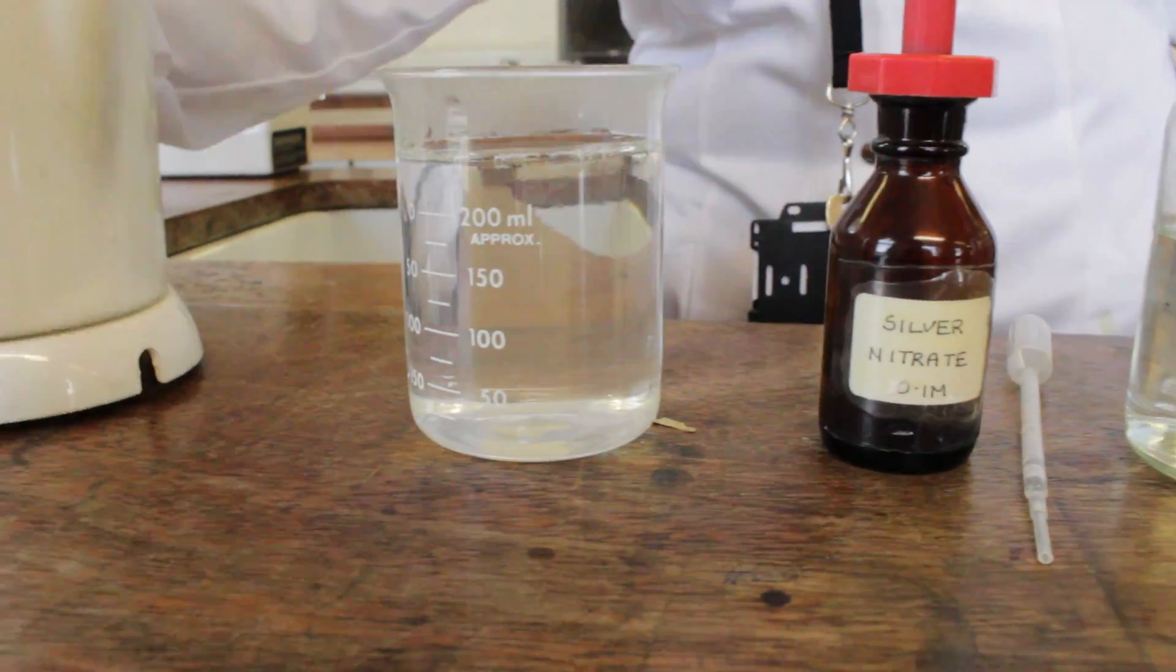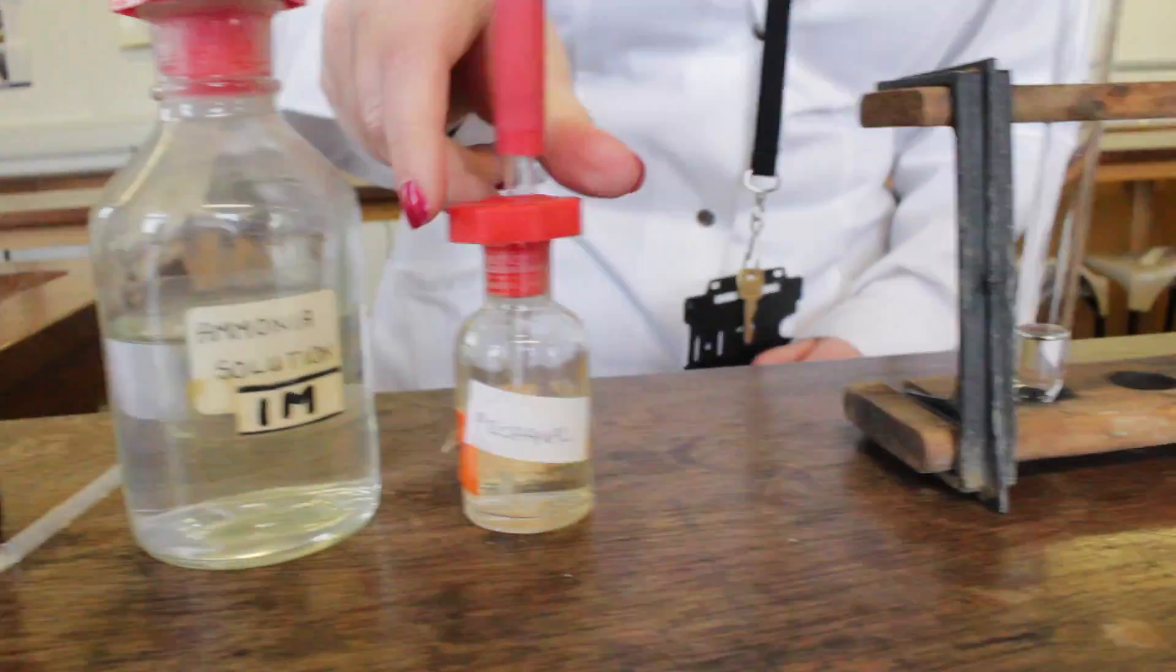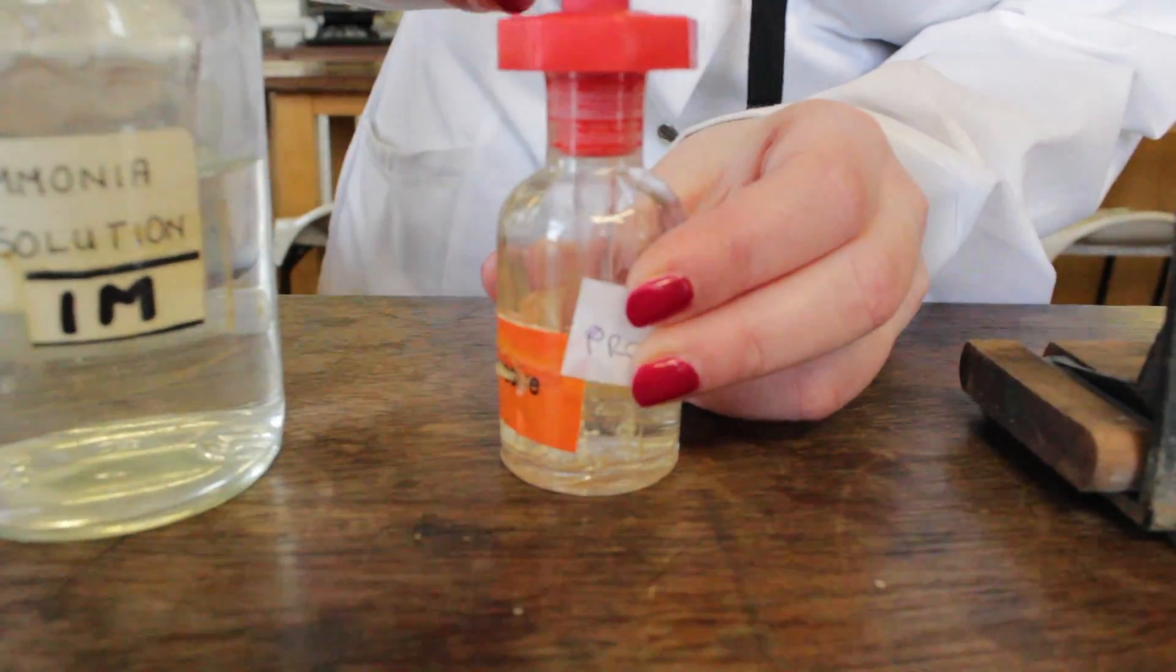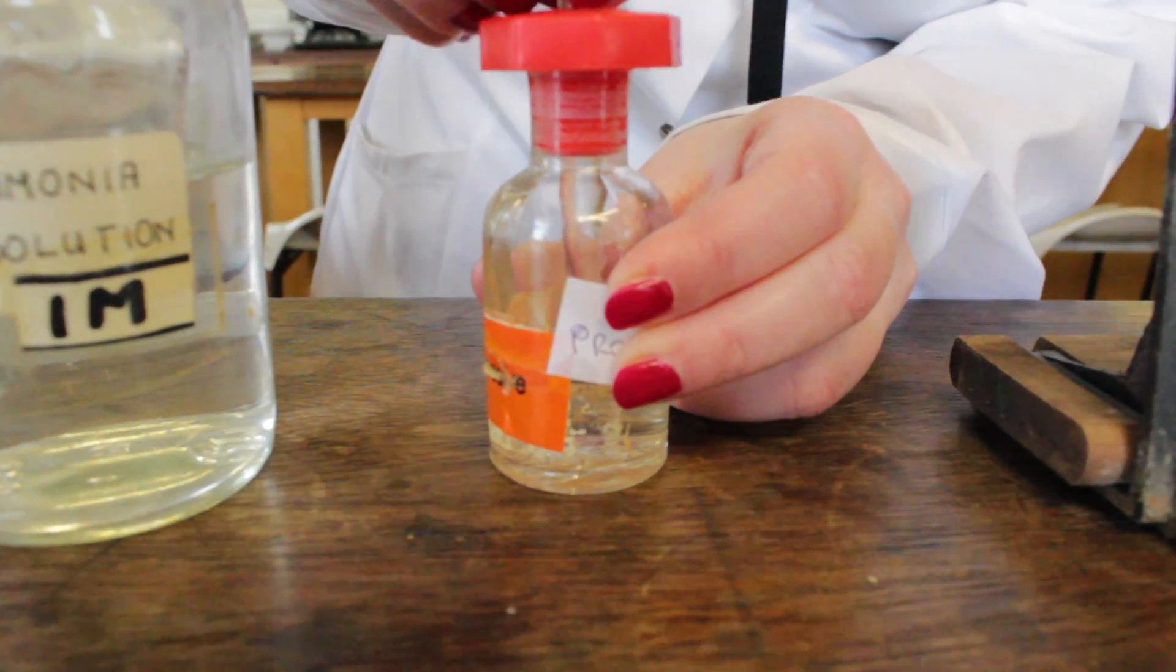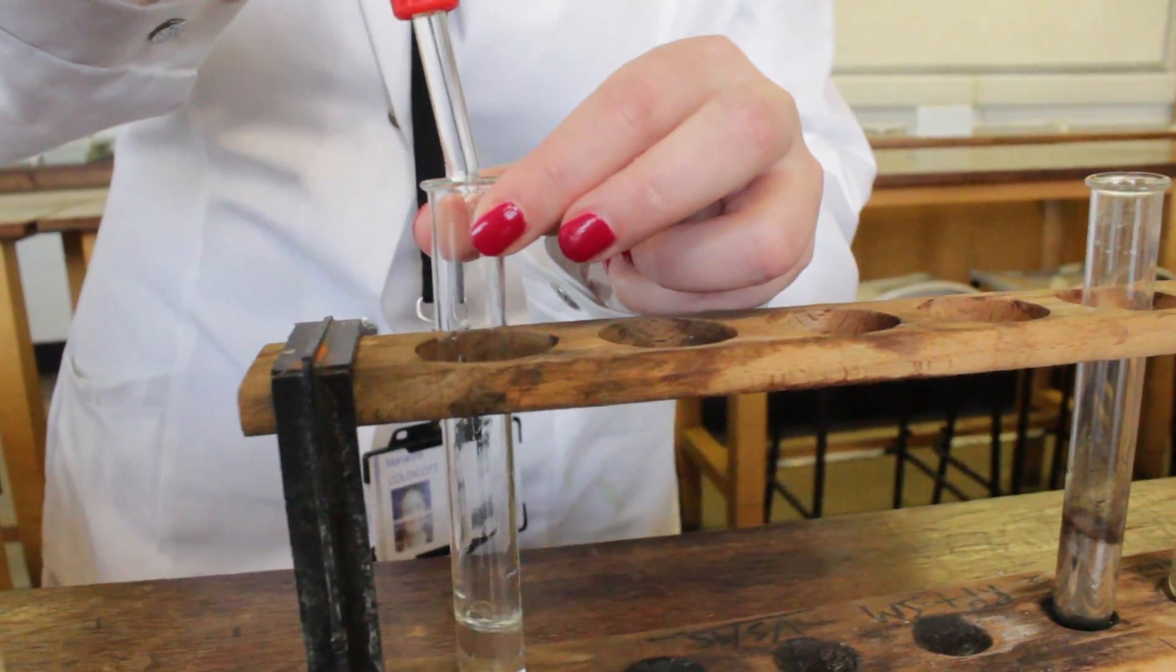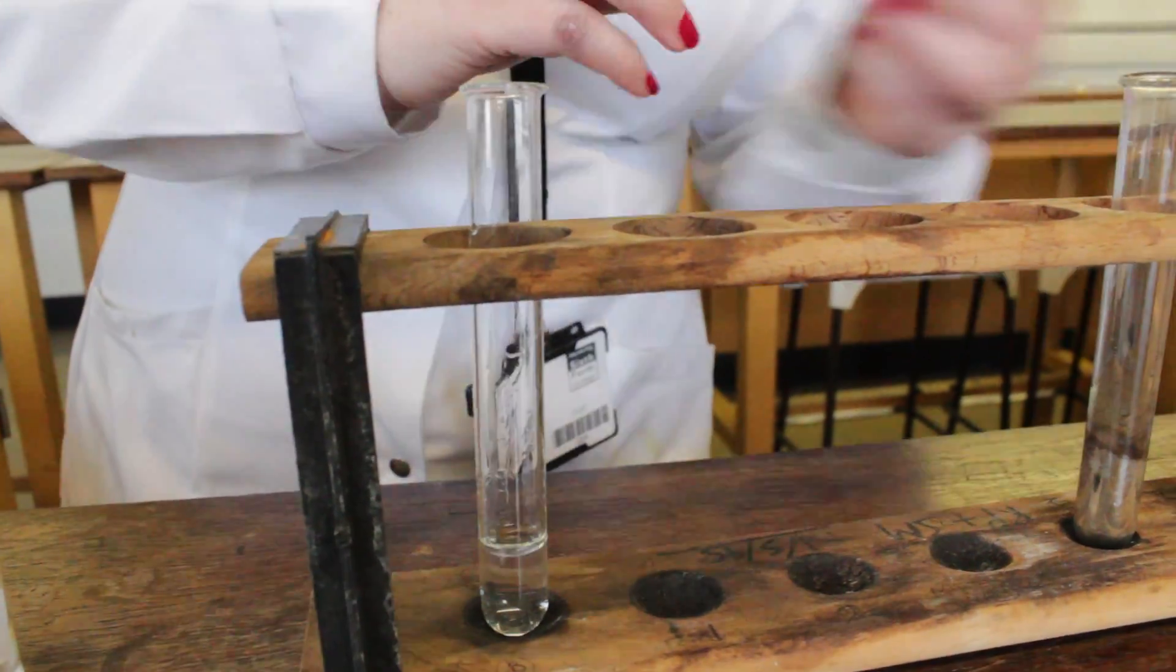So, boiling water ready in our beaker. We now take our propanol. You want to add about 10 drops and you need to add these quickly. Quickly, bung on, give it a good shake, place in the water.